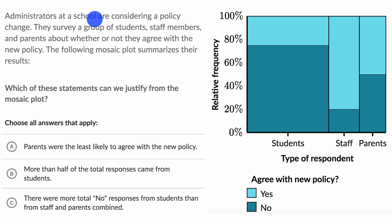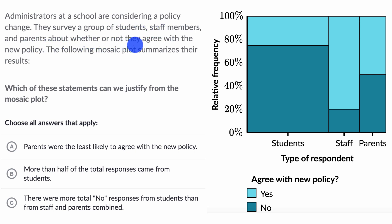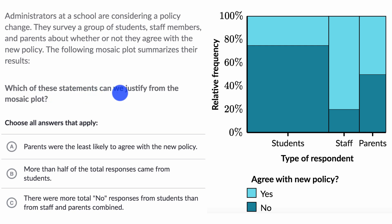We're told that administrators at a school are considering a policy change. They survey a group of students, staff members, and parents about whether or not they agree with the new policy. The following mosaic plot summarizes their results. Which of the following statements can we justify from the mosaic plot?